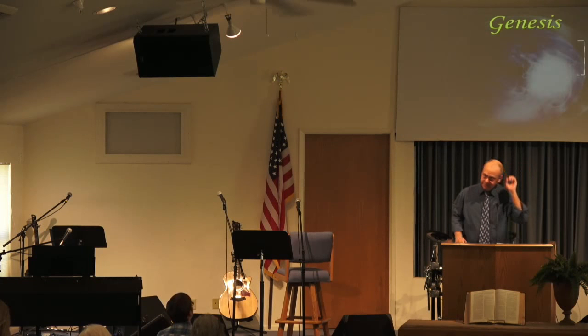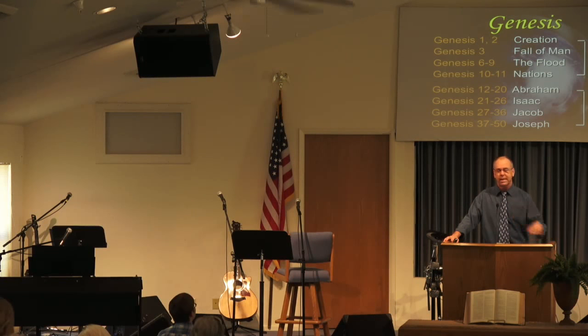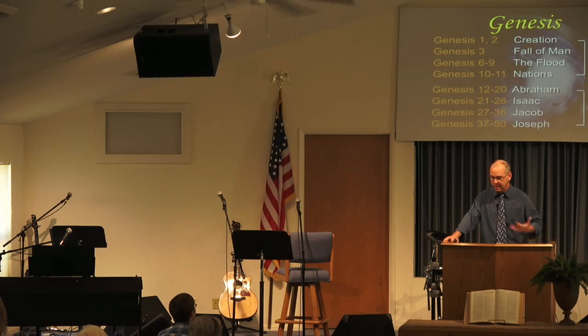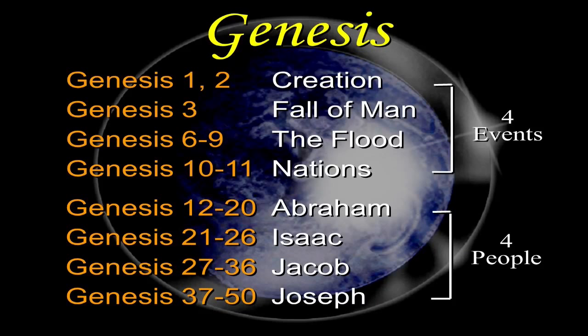As we recap where we've been: Genesis gives us four major events and four major personalities. The four major events are the creation of the heavens and the earth, the fall of man where sin and death entered the world, the flood of Noah's day, and the dispersing of the nations throughout the earth. Those first 11 chapters cover 2,000 years of time. Then God zeroes in on a people group — Abraham, called from Ur of the Chaldees, present-day Babylon, into the promised land of Canaan, present-day Israel. That promise was reiterated to his son Isaac and then to his son Jacob. Joseph, one of Jacob's sons, was sold into slavery into Egypt, which is what gets the children of Israel from the promised land down into Egypt because of a famine.